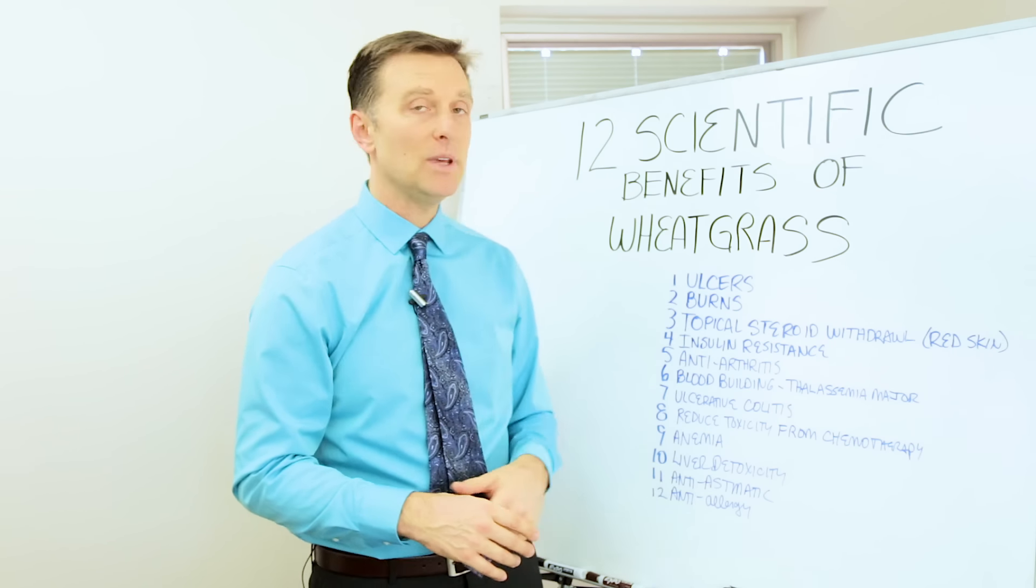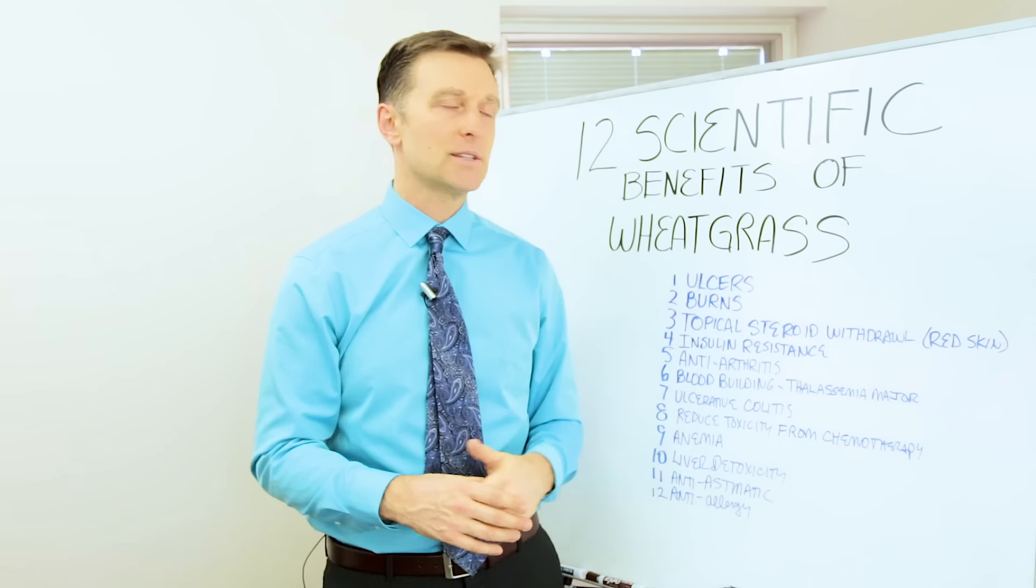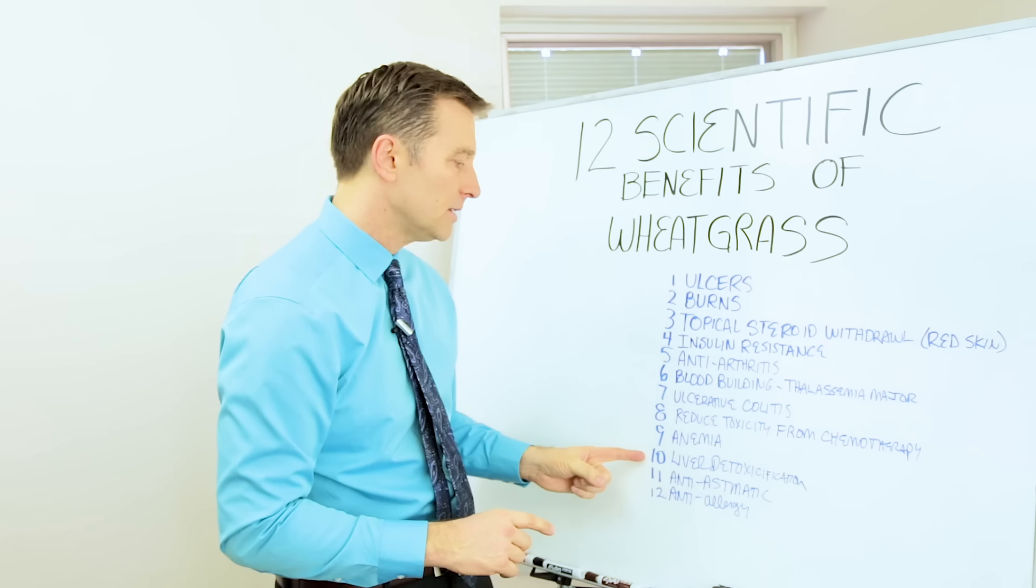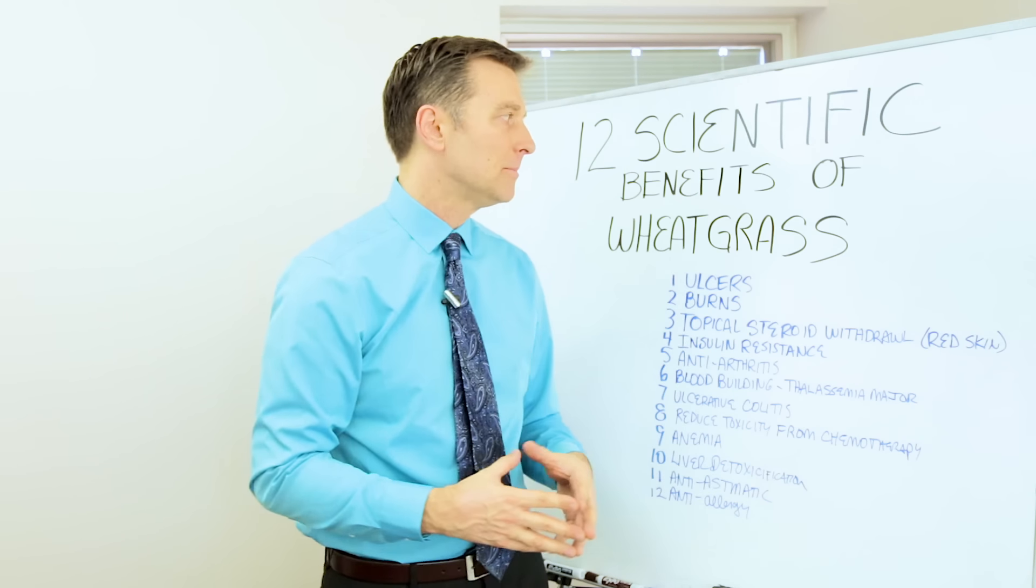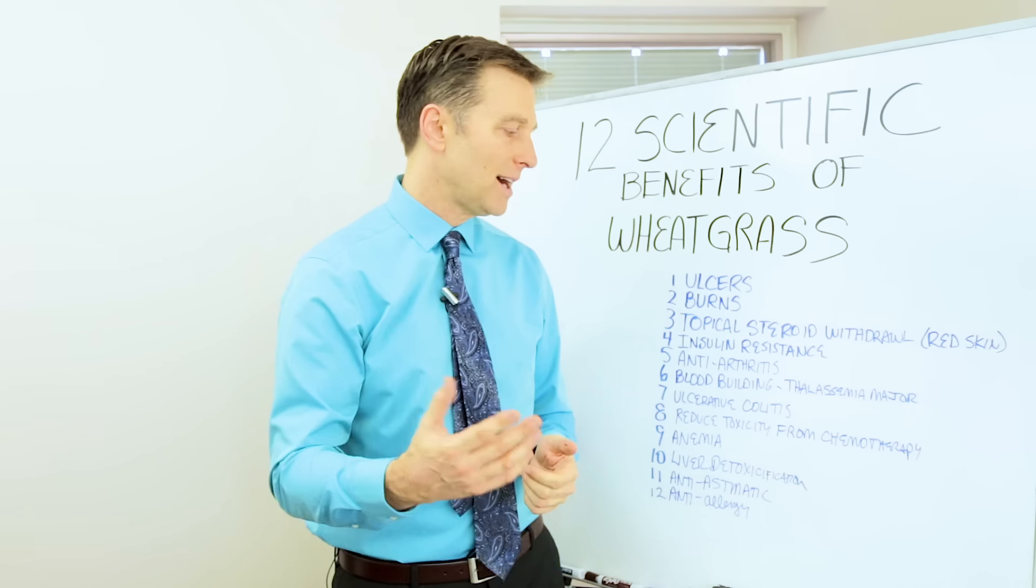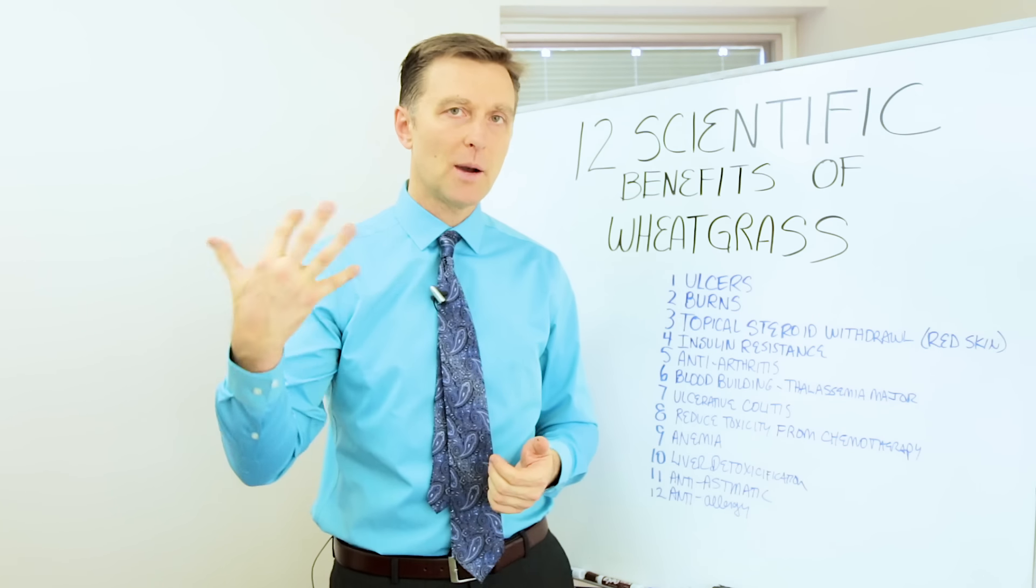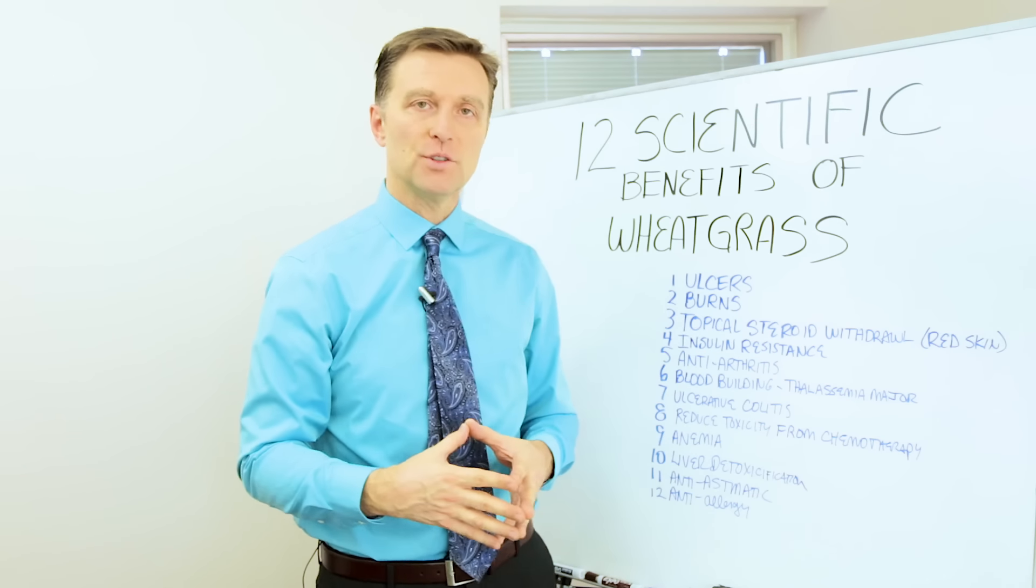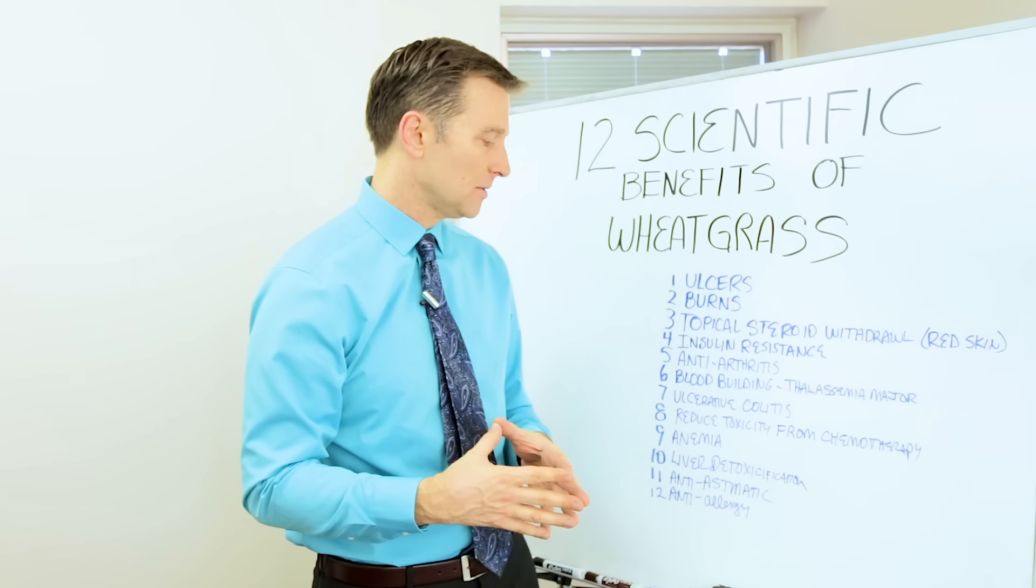And then number nine, anemia, because wheat grass has known benefits for a blood builder. So then we have liver detoxification. The purifying effect of wheat grass in a juice powder or whatever has great properties to help cleanse the liver. It has phytonutrients that help dismantle chemicals in the liver too.